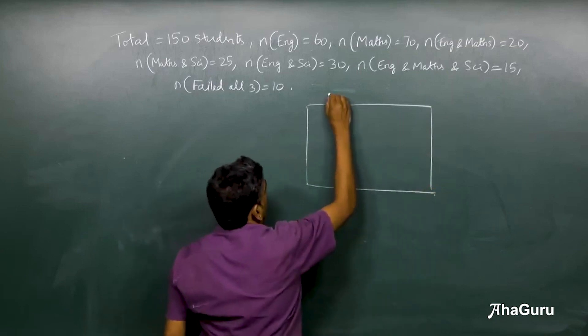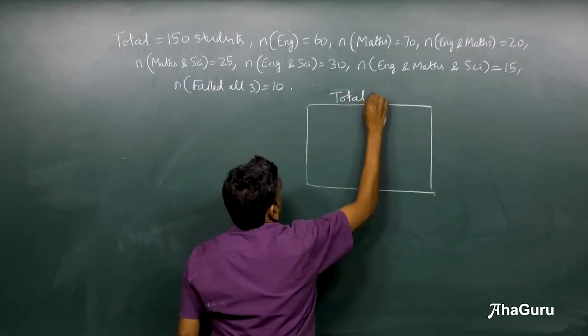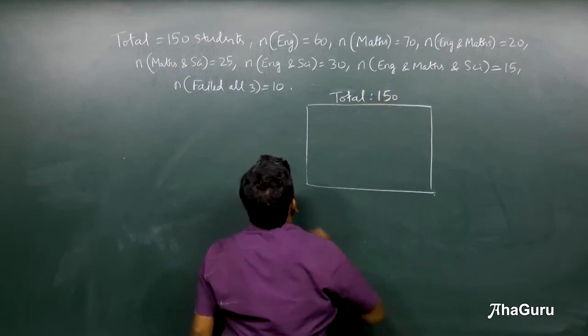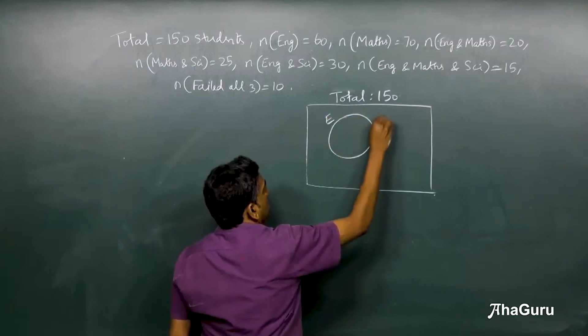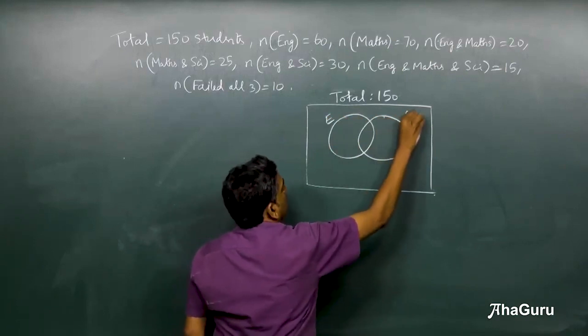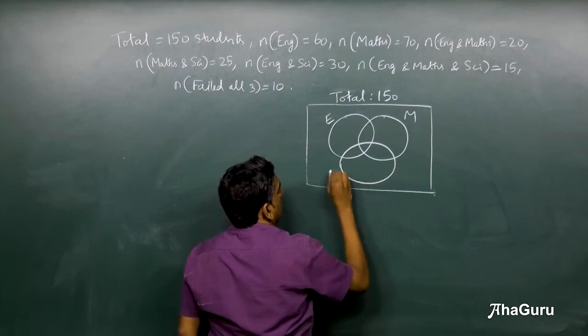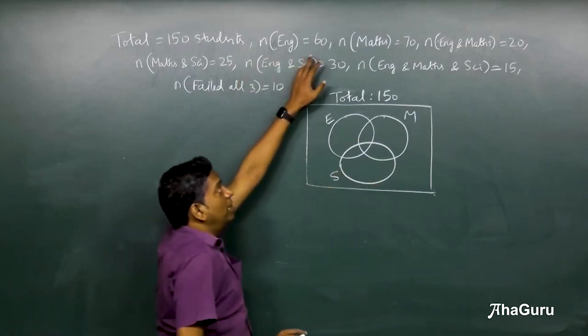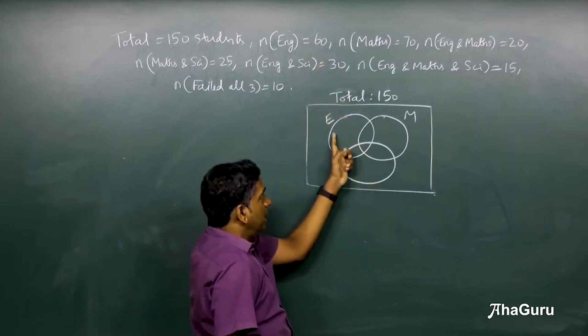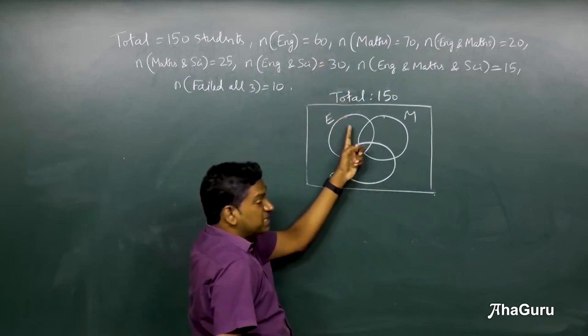We know that the total is 150 students. So let's have one for English, Math, and Science. Now in English the total number of past is 60, but we can't write 60 because we have to specify which region.